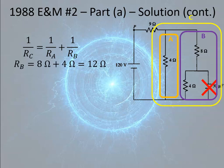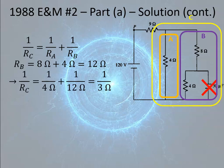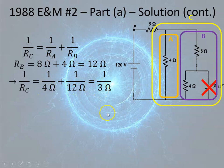We know that they're in parallel, so 1 over RC equals 1 over RA plus 1 over RB. RB is just the 8 ohm and the 4 ohm in series, adding to give 12 ohms. Plugging in, 1 over 12 plus 1 over 4 is the same thing as 1 over 3. There's a cool trick: if you have a higher resistance resistor in parallel with a lower resistance resistor, and the higher number happens to be a product of two consecutive integers and the lower number is the greater of those, then the equivalent resistance is the lesser. For example, the equivalent resistance of a 56 ohm and an 8 ohm resistor is 7 ohms.